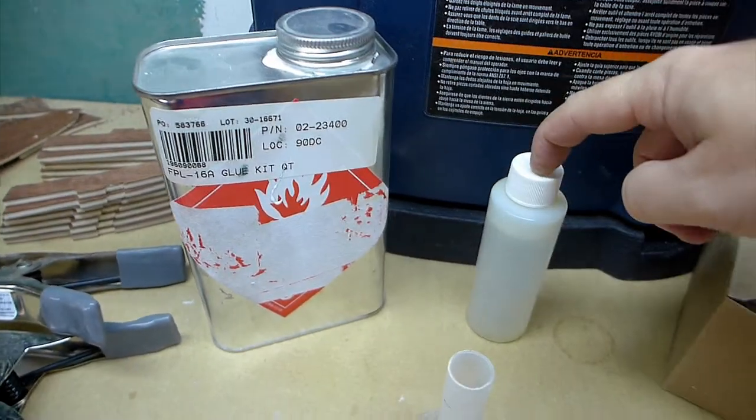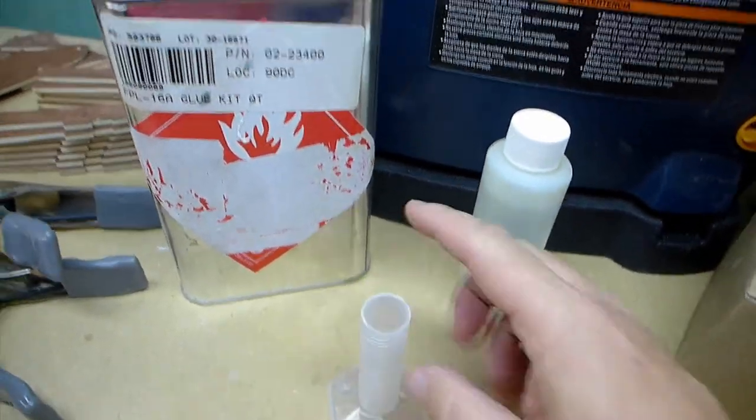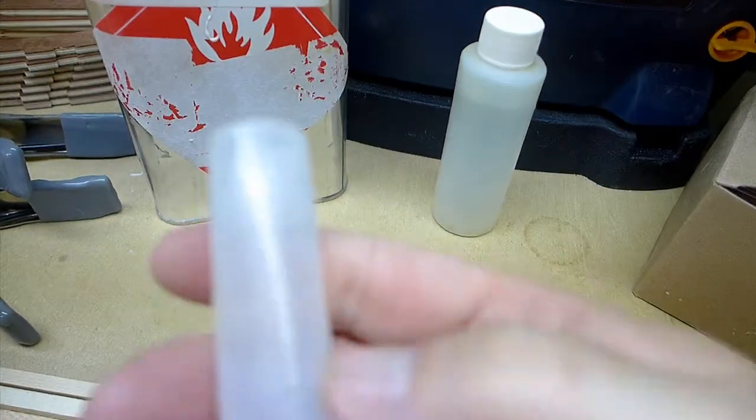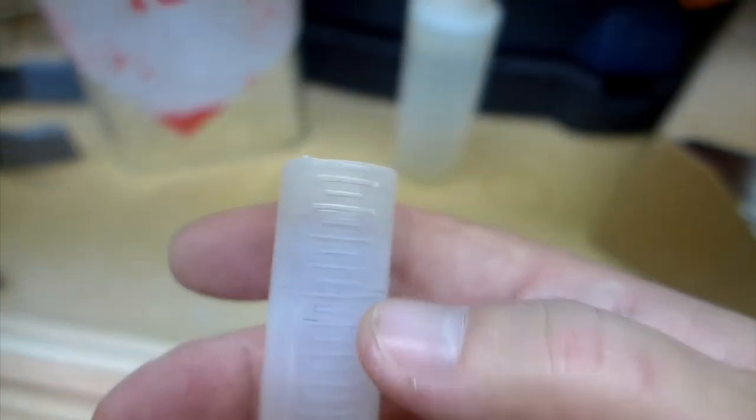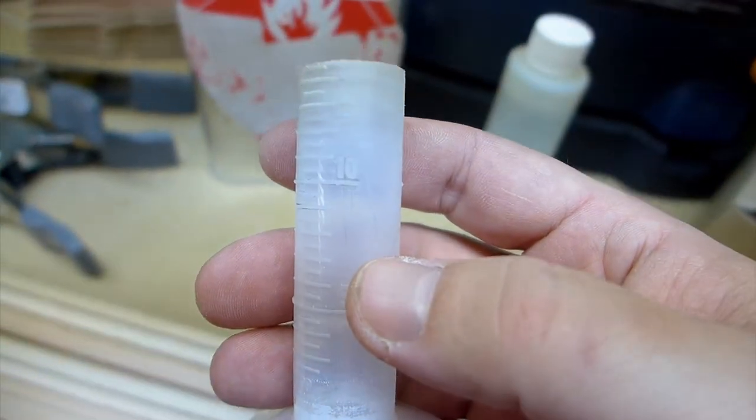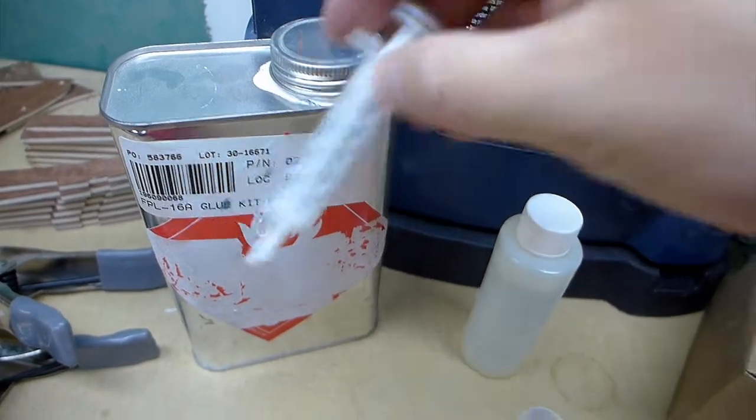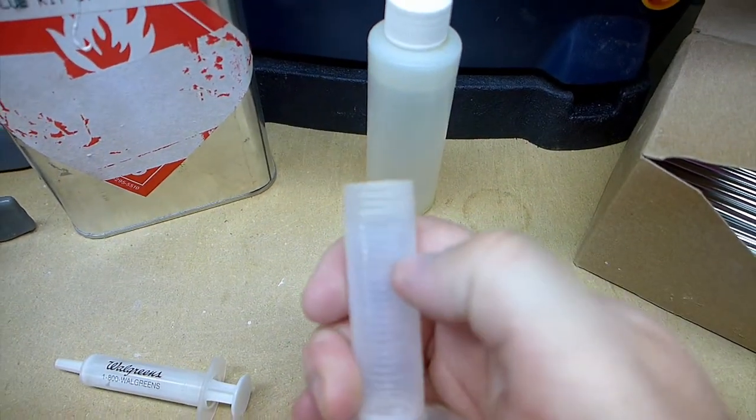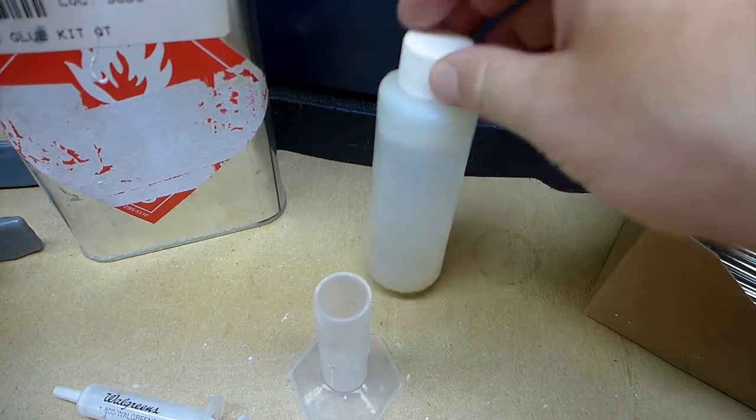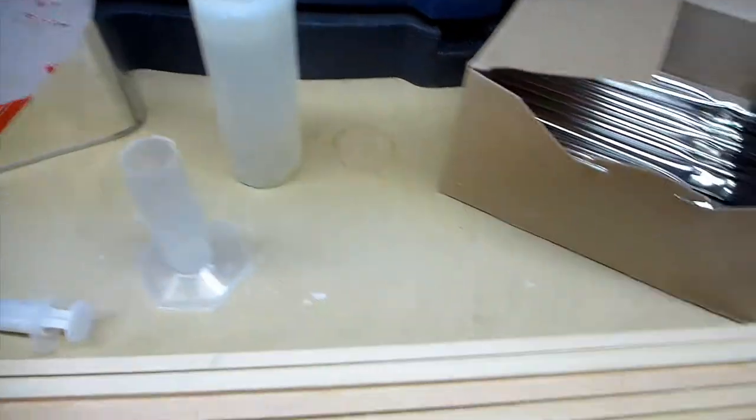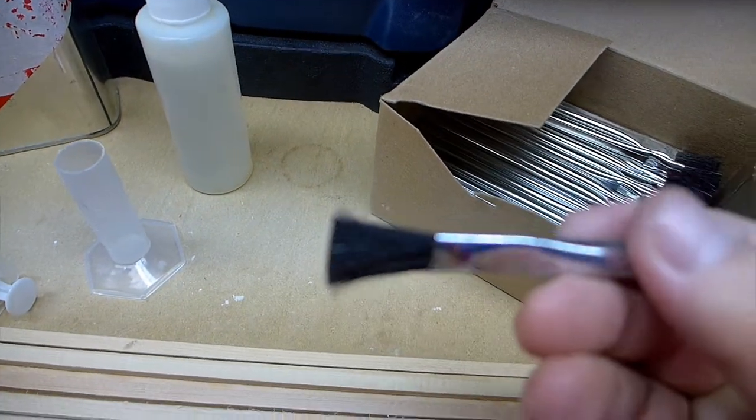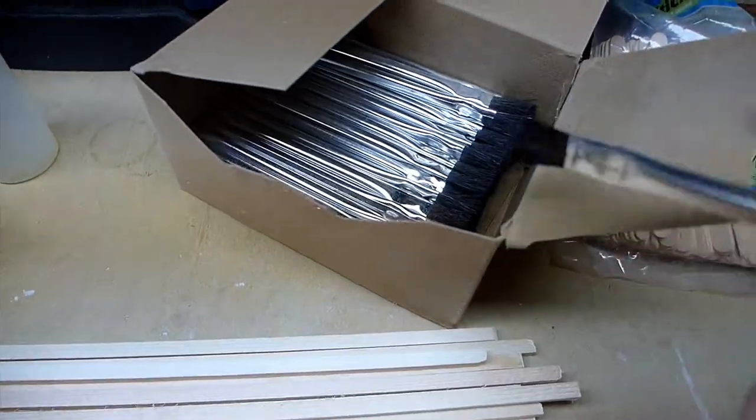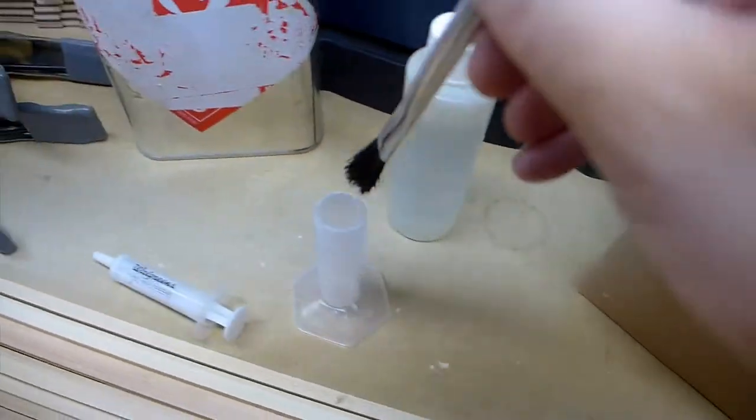You mix ten parts of the resin with one part hardener, and I just bought this graduated cylinder. It was this tall originally, and I just cut it down. I add resin up to the ten mark using a syringe, then dribble in some hardener until I get to the next mark. Then I use a popsicle stick and mix it thoroughly. Then I use one of these little glue brushes. I've got a box of 500, and you'll go through a lot of them. Just buy a big box like this off Amazon. I dip it in there and spread it around.